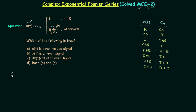Looking at the four options, it is clear that all the options are talking about signal XT. So we need to find the nature of signal XT, and we can do this with the help of CN. If we can find the nature of CN, then by using the XT-CN pairs we can easily comment about the nature of signal XT.